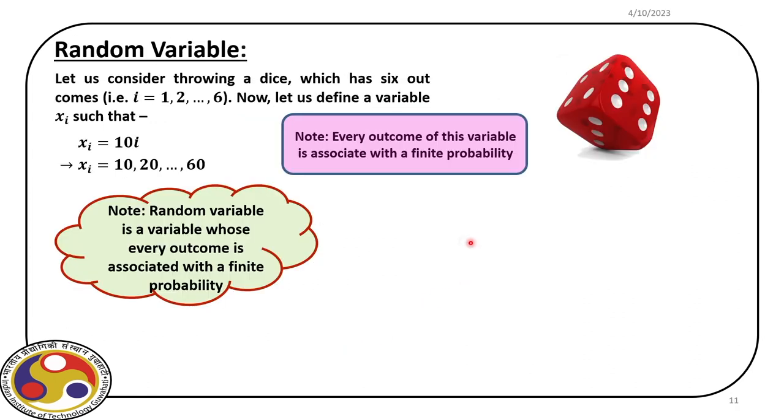With that basic definition, let us move forward and investigate how we can use this in our problem. For that, we first need to define what we call a random variable. In the introduction, we discussed the deterministic concept of design and then the reliability-based design where we bring in uncertainty, and for that we first need to define the random variable.